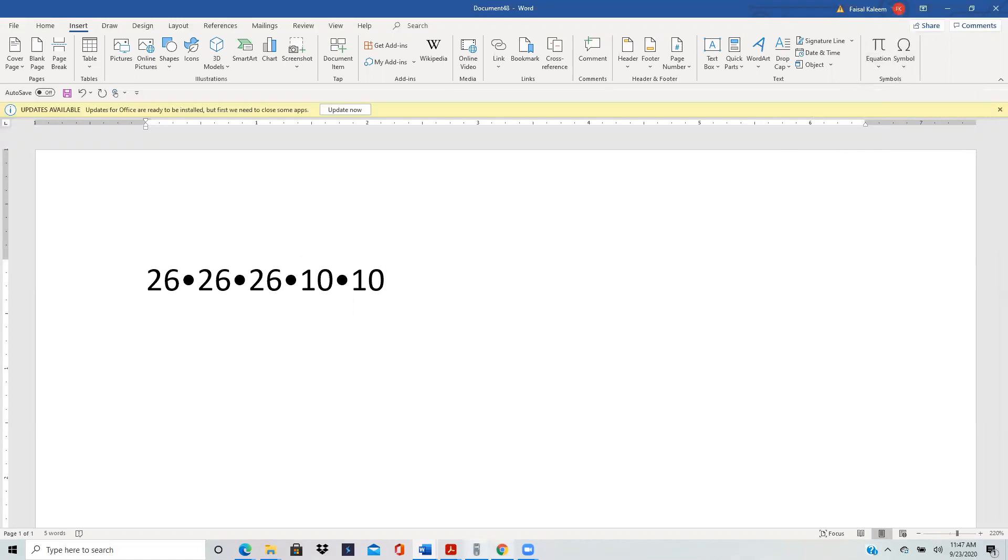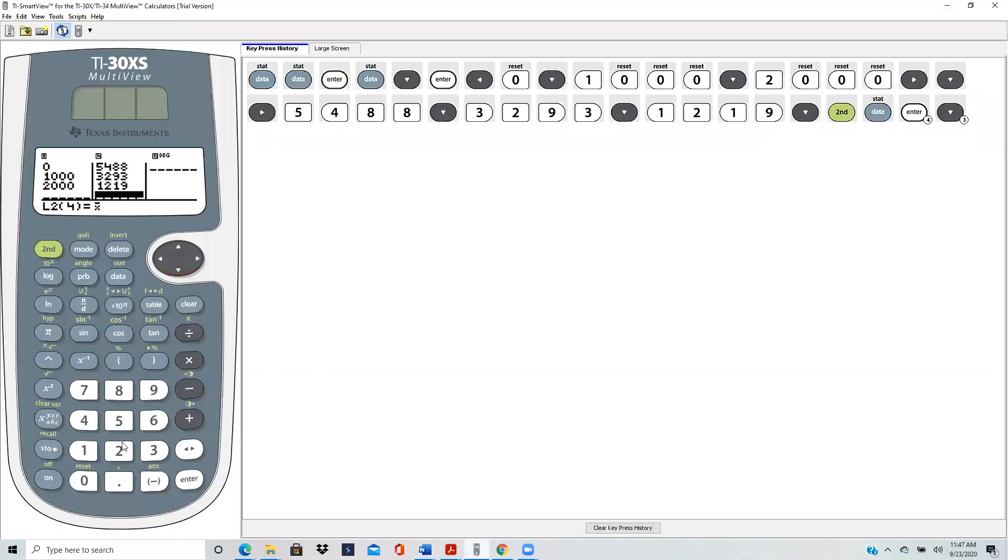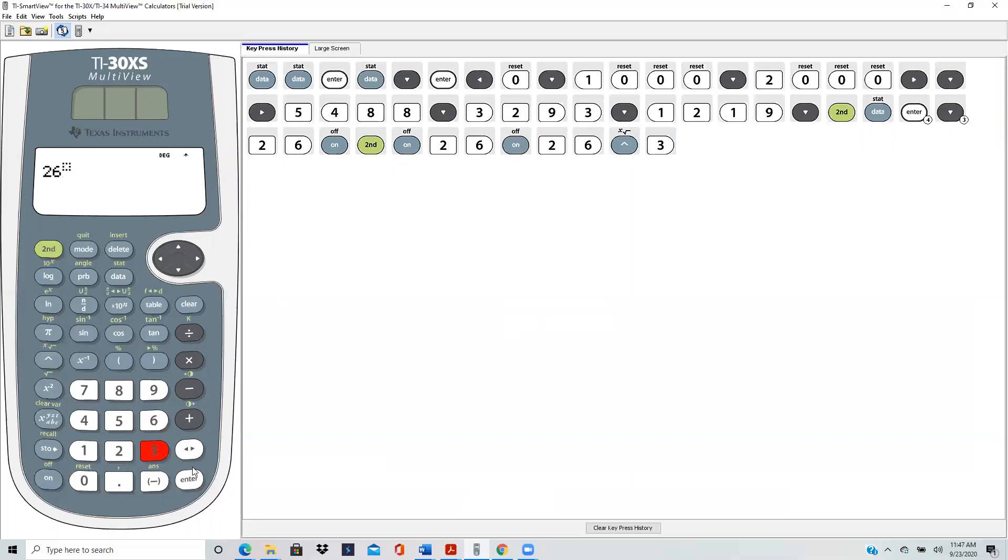And then two zeros. So 26 raised to power three, and you have two more zeros for the two tens. So that's 1,757,600.